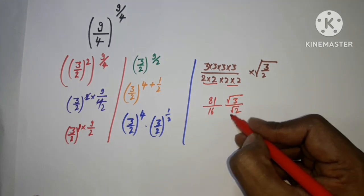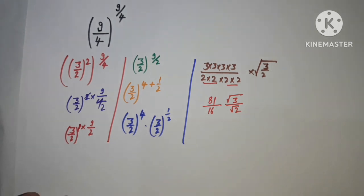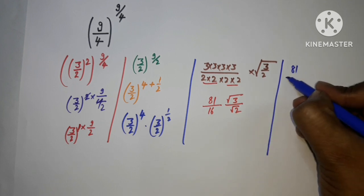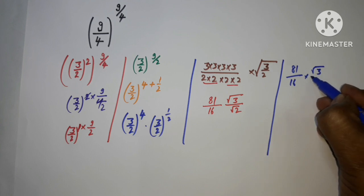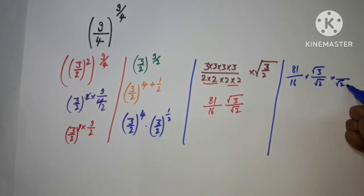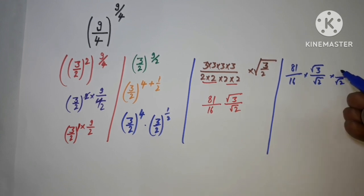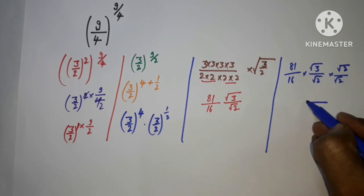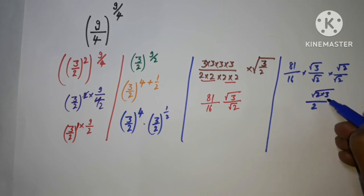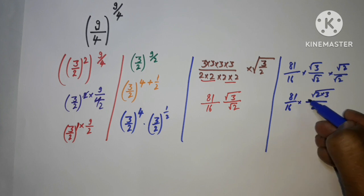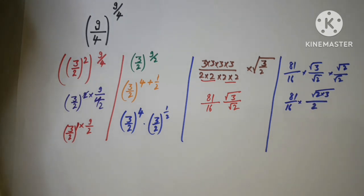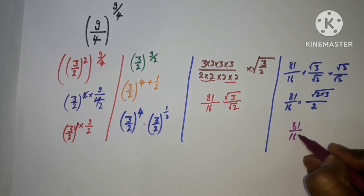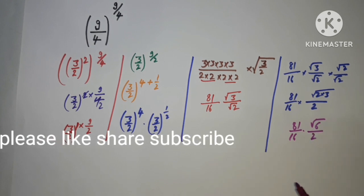In the denominator we have the irrational number root 2, so we need to rationalize it. We multiply both numerator and denominator by root 2. So root 2 times root 2 becomes 2, and root 3 times root 2 becomes root 6. With 81 by 16 already there, it becomes 81 by 16 multiplied by root 6 upon 2.